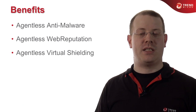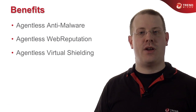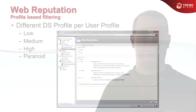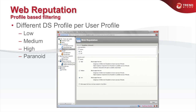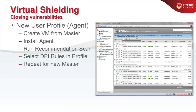Both web reputation and virtual shielding are also agentless — provided from the hypervisor level as a service. Agentless web reputation, like agentless anti-malware, is configured on a per-profile basis, with a choice between low, medium, high, or allow well-known good sites only. Deep Security also includes an agentless deep packet inspection module, one functionality of which is virtual shielding to prevent vulnerabilities from being exploited remotely.